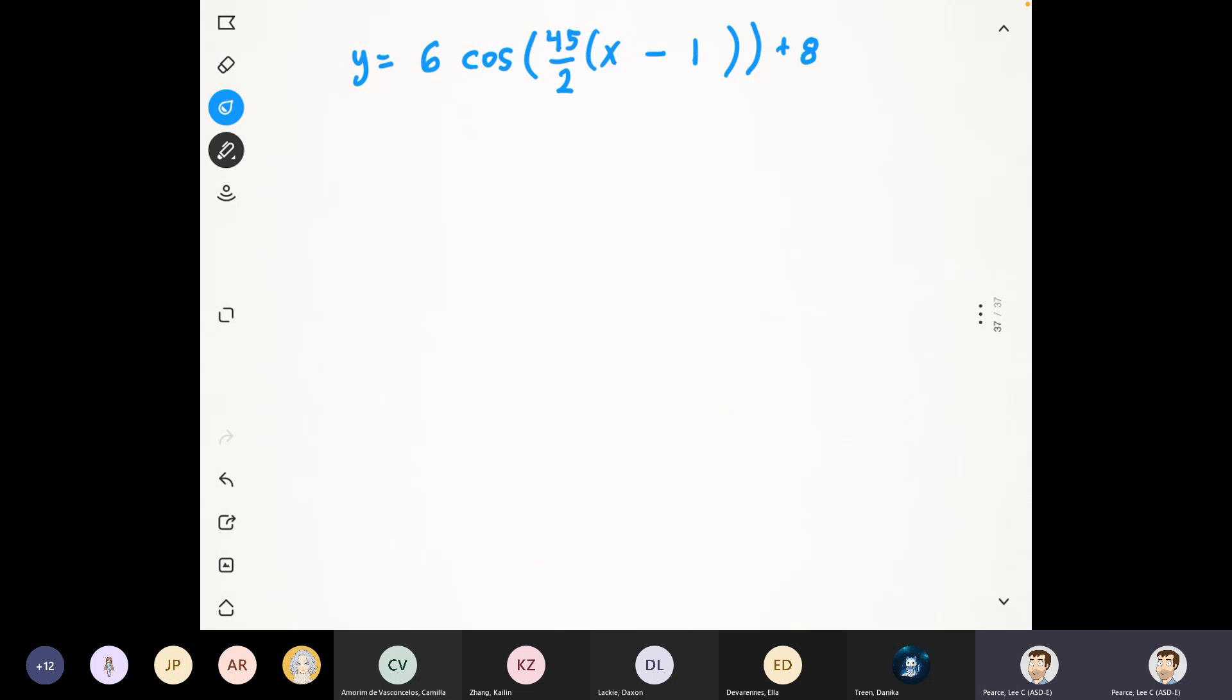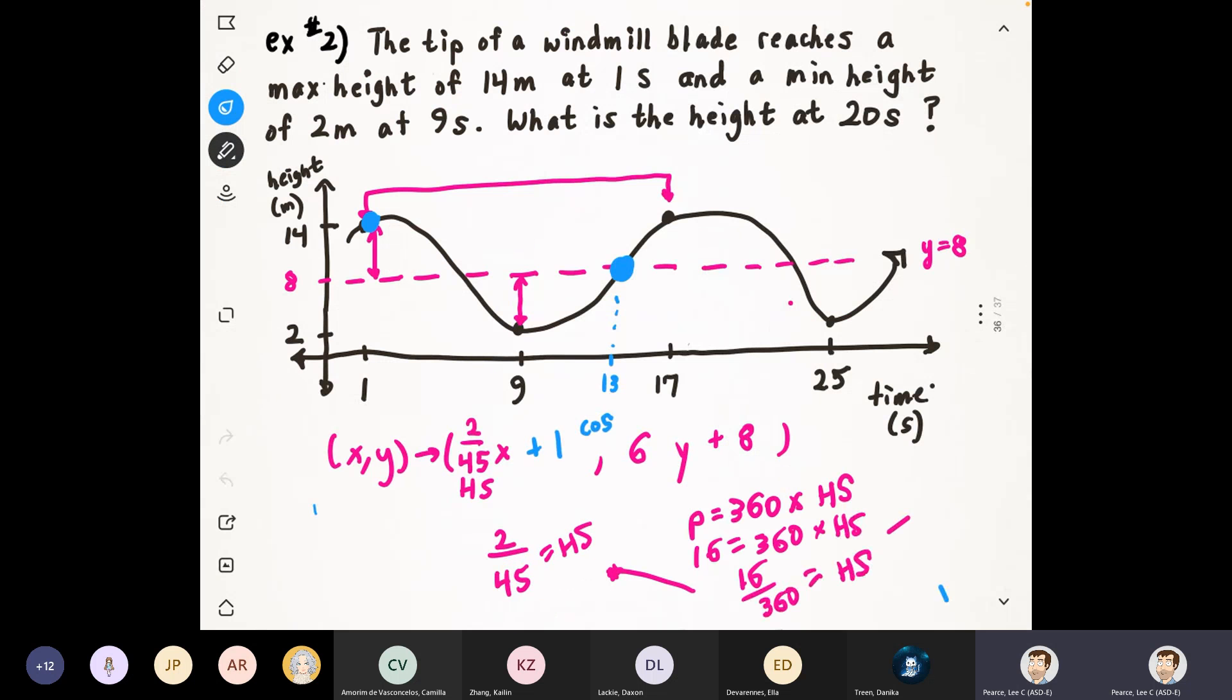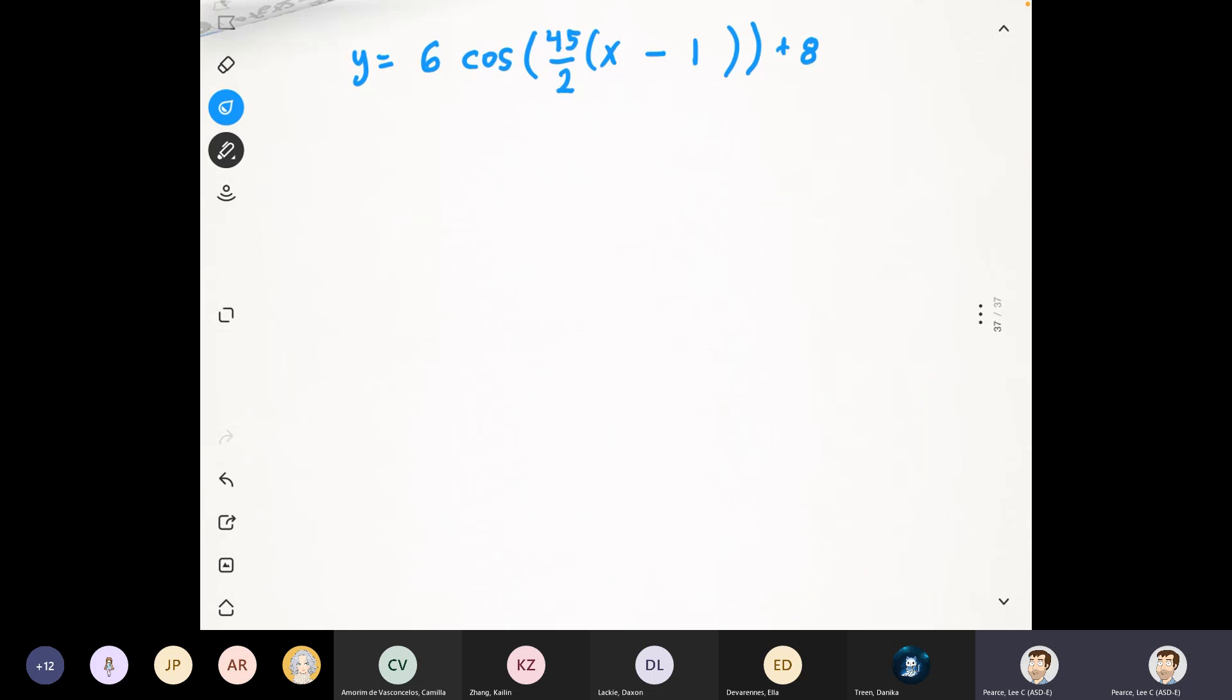We're not finished. We have to plug in a number for x using your calculator and doing the order of operations. Let's go back to our problem and see what we're asked. The actual question is what is the height at 20 seconds? And of course, our time, seconds, is the x-axis. So we want to plug in 20 for x. You'll always be plugging in for x. So if you plug in 20 for x, this is what we're going to have.